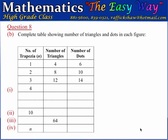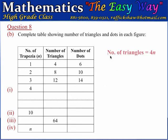Part B gives us a table and we're required to complete it. The table has a column for the number of trapeziums matching the figure number, a column for the number of triangles, and a column for the number of dots. In the first figure with one trapezium, there were 4 triangles and 6 dots. In the second figure with 2 trapeziums, there were 8 triangles and 10 dots. In the third figure with 3 trapeziums, there were 12 triangles and 14 dots. The formula for triangles is 4N and for dots is 4N + 2, and we can verify these are satisfied in the table.